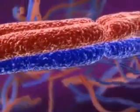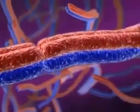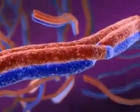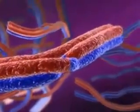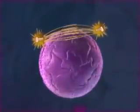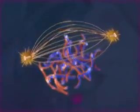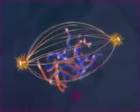In meiosis, homologous chromosomes stick together in pairs. The close association of homologous chromosomes allows segments of non-sister chromatids to trade places. This recombination of maternal and paternal genetic material is a key feature of meiosis.